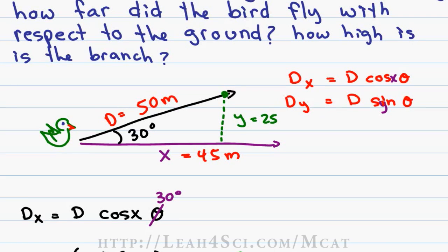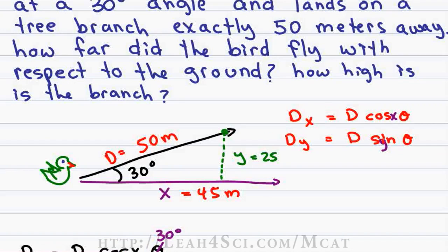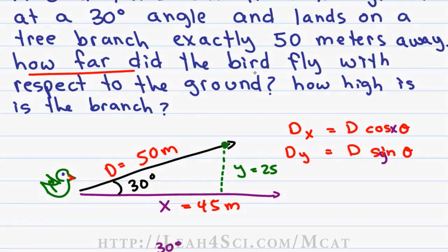And so for the y value we have 25 meters which is a lot farther from 50 as we initially predicted. After you finish a lengthy calculation, always go back to the question to make sure you answered it correctly. The question asks how far did the bird fly with respect to the ground, that's our x value, the bird flew 45 meters with respect to the ground. How high is the tree branch, that's our y value at 25 meters.